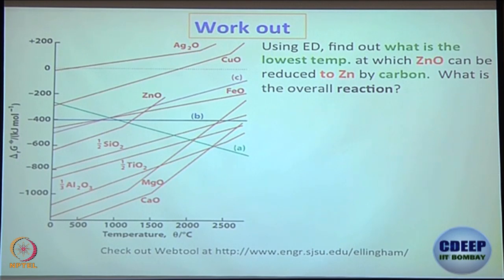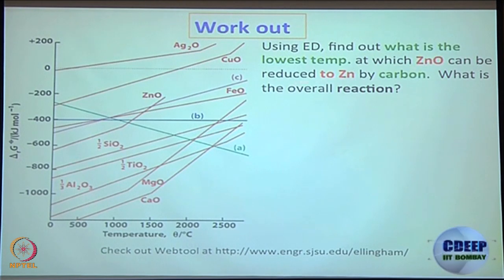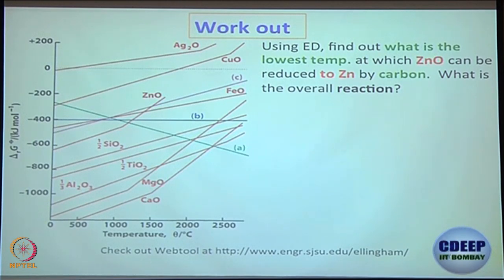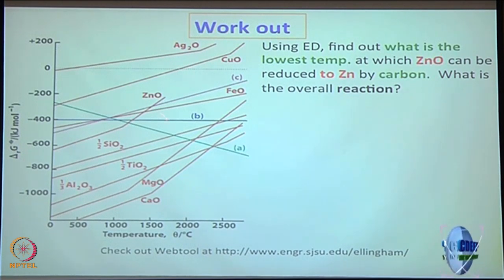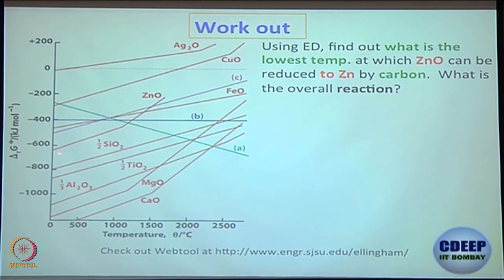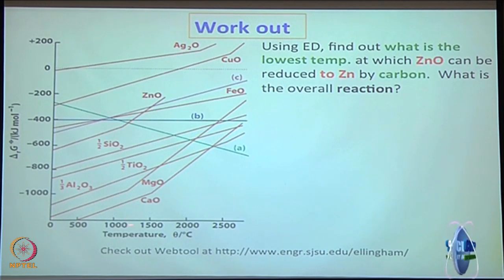Work out this one. This is a question using the Ellingham diagram: find out what is the lowest temperature at which zinc oxide can be reduced to zinc by carbon. The carbon monoxide curve is in green; the zinc oxide curve is this one. This temperature is around 1250°C — that is what you need to convert zinc oxide to zinc by using carbon.